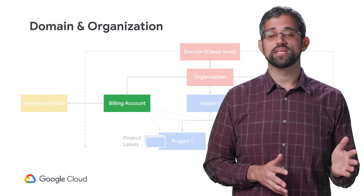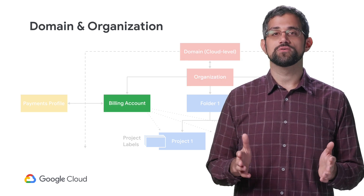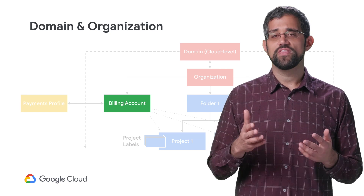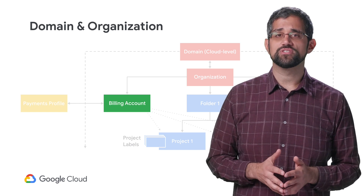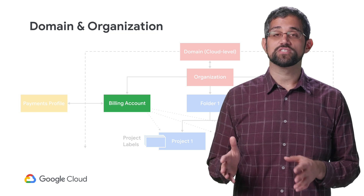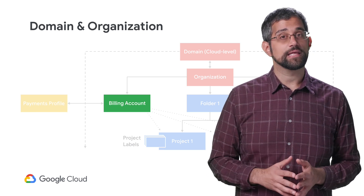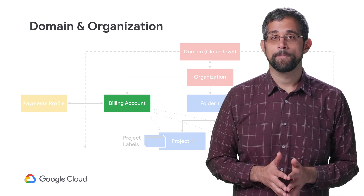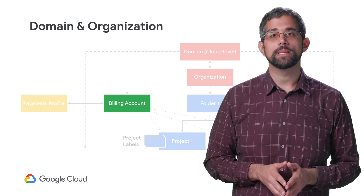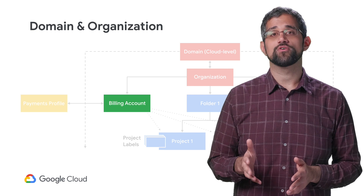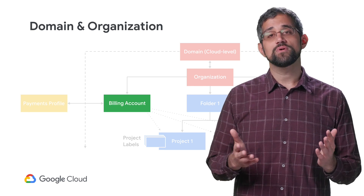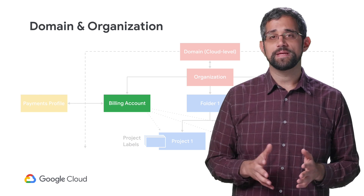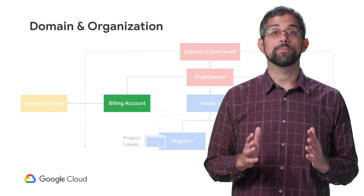Billing accounts are under the organization and control how you pay for anything the associated projects use. They have their own set of roles and permissions, such as billing account users, who can see how much each project is spending and link projects to a billing account. Only a billing account admin can remove projects from the billing account and set budgets. It's important to know who your billing admin is, because they're needed if you ever want to contact billing support. In most cases, you'll only need one billing account per organization, which will also help keep things simple when looking at what you're paying per project.